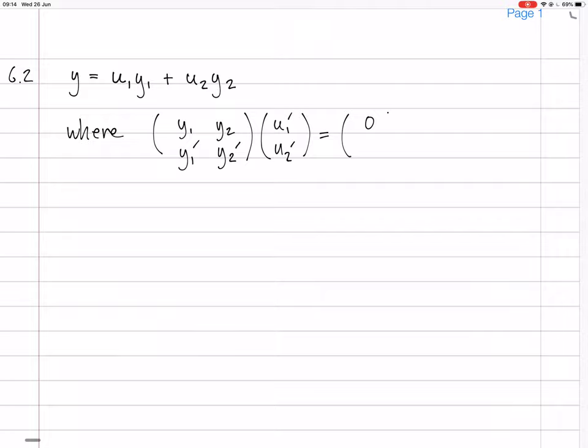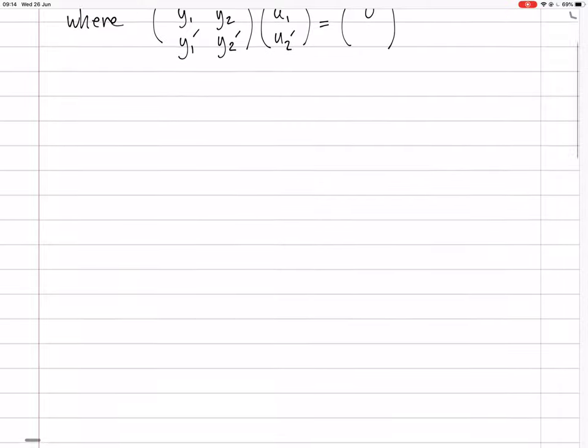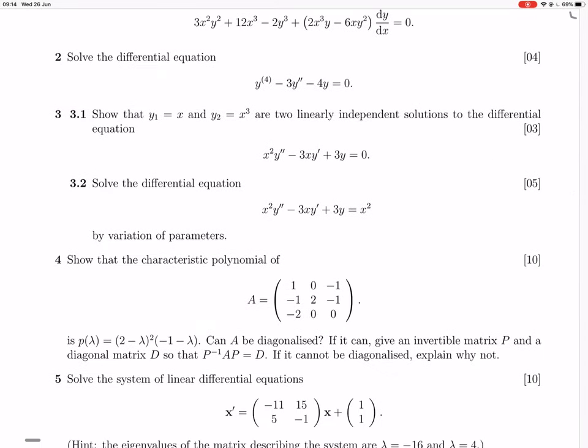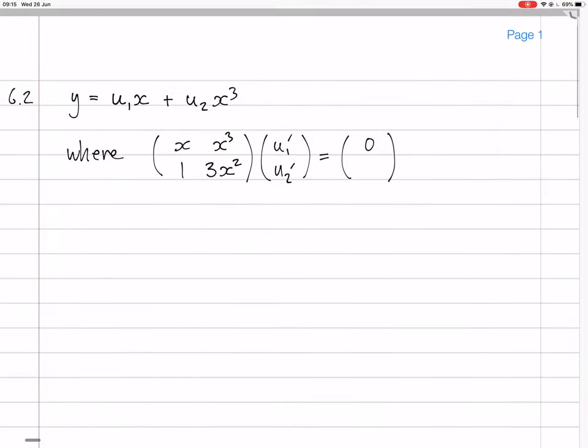So let me just replace all these things with the actual values that we have. So y₁ was x, y₂ is x cubed, so here we have x and 1, and here we have x cubed and 3x squared. And then this last entry that I haven't written down yet, that's going to be the thing on the right of the equation, which is x squared divided by the coefficient in front of the second derivative, which is also x squared, so it's just one in this case.